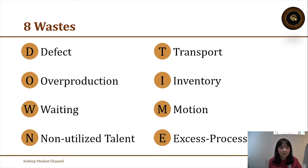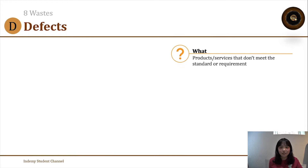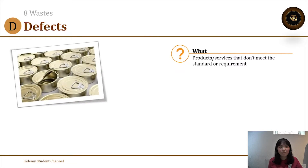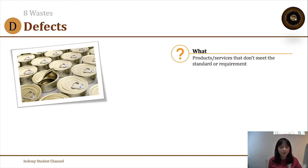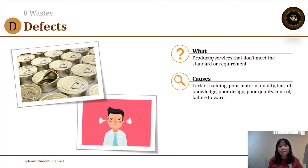Starting from defects — we all know what a defect is. It's a product or service that doesn't meet the standard or requirement. The easiest defect example is in manufacturing, like a can that is not properly sealed. It can also happen in the service industry where a company cannot meet customer satisfaction standards.